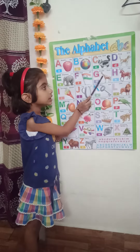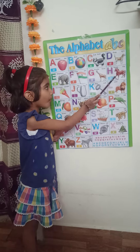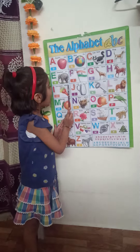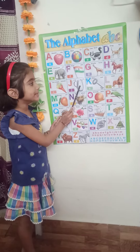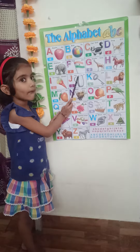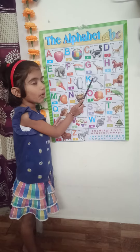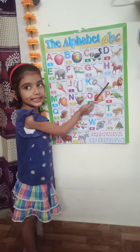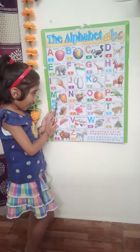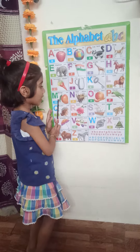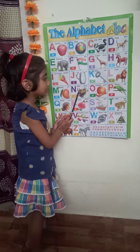D for giraffe, A for horse, A for ice cream, J for jug, J for tree, A for lion, A for mango.